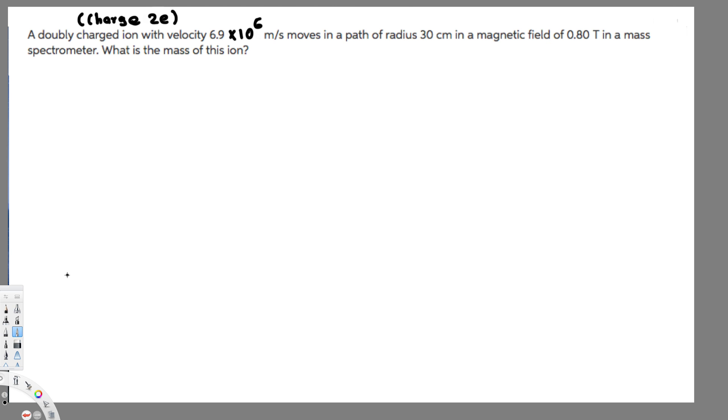Hey, what's going on guys, let's do this problem right here. This question is asking: a doubly charged ion with velocity 6.9 × 10⁶ m/s moves in a path of radius 30 centimeters